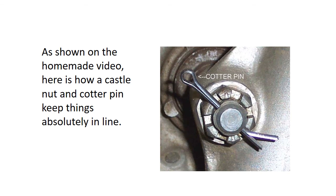A castle nut and cotter pin can also be used to hold things in place. The shaft goes through the middle — this is common in automotive applications like travel trailer wheel bearings — you put the castle nut on and then insert the cotter pin through the slot to hold it in place until you pull it back out. And that's it for fastening things together.